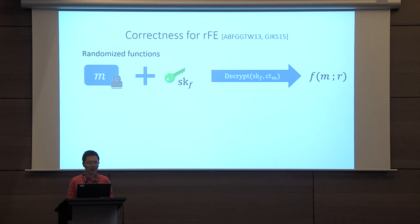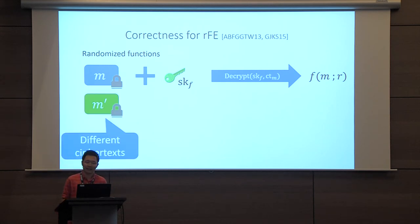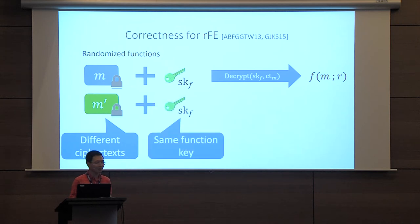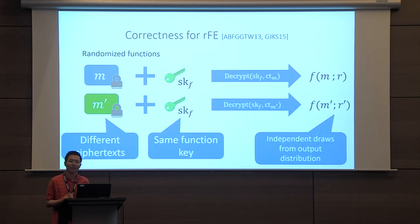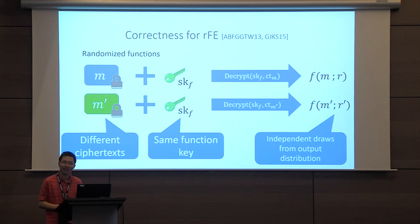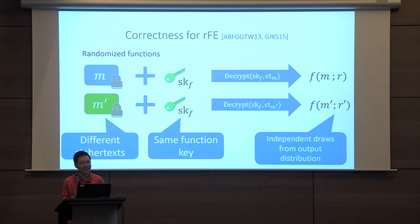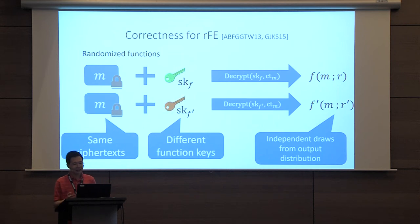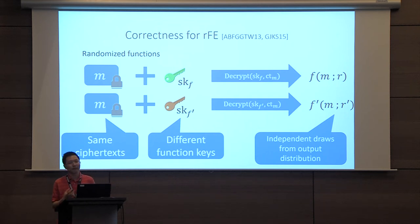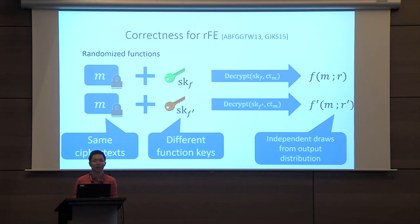Things get more complicated when we consider two ciphertexts. If we have two independent encryptions and apply the same function key to decrypt, what we should get in a randomized setting is two independent draws from the output distribution — even if those ciphertexts encrypt the same value. Similarly, if we have the same ciphertext but apply two independently generated function keys for the same underlying function, we should again see two independent draws from the output distribution.